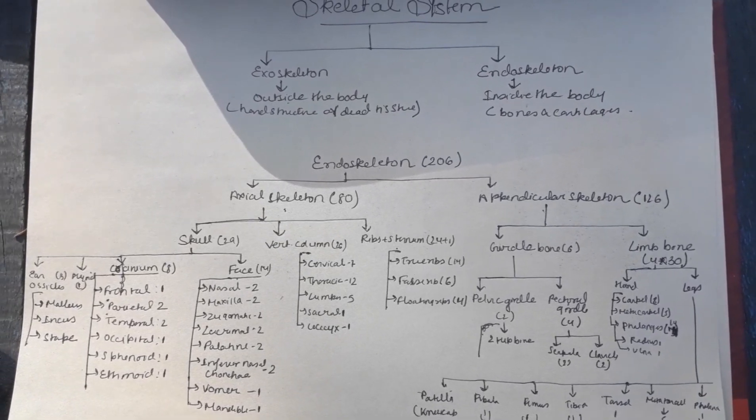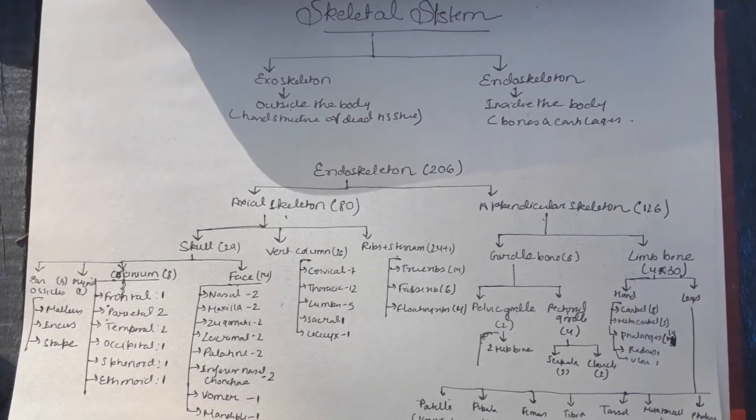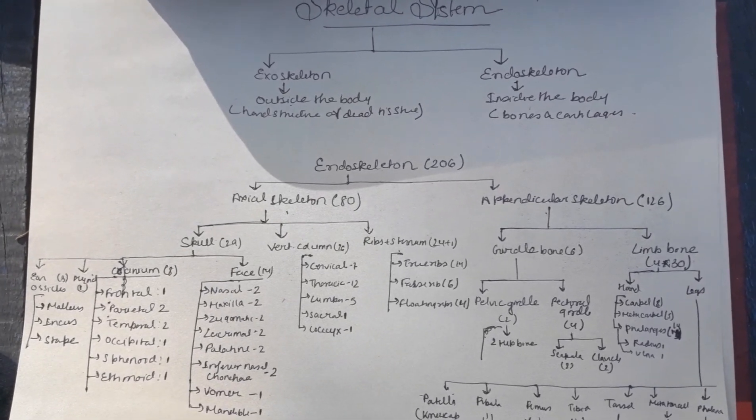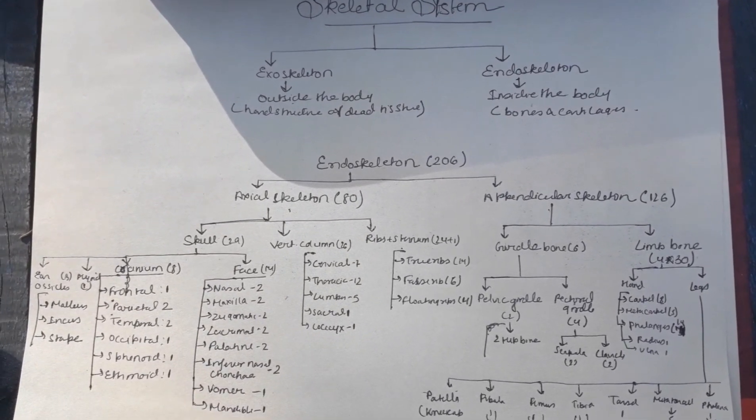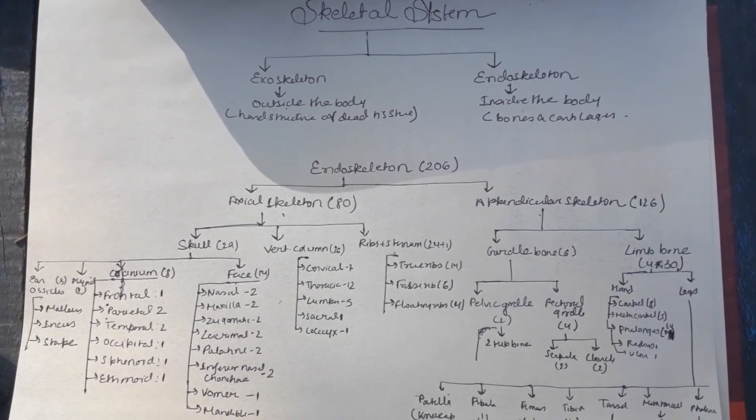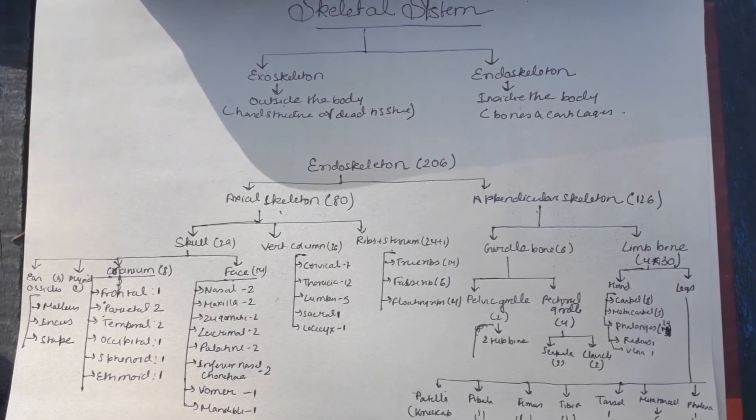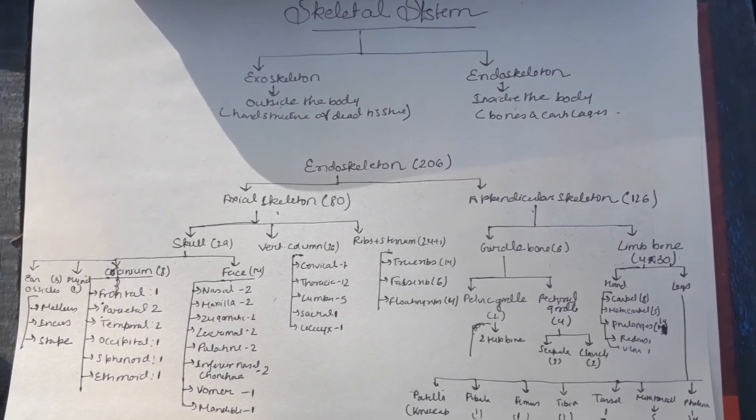Now the skeletal system is divided into two groups: first of all, exoskeleton, which are present outside our body - those are hard structures and dead tissues; then second, endoskeleton, which are present inside our body, which include bones and cartilages.